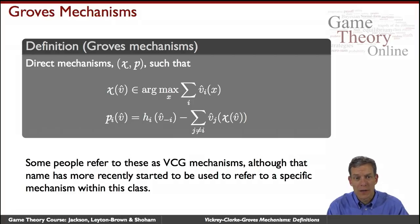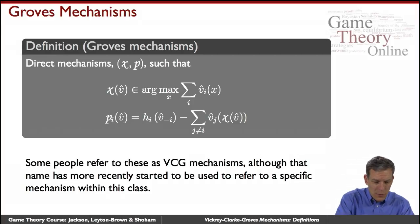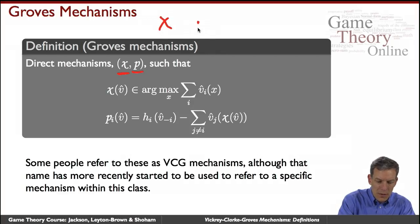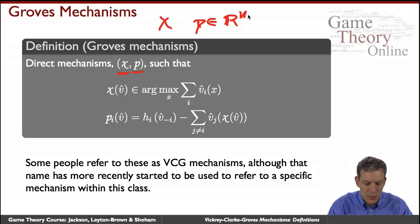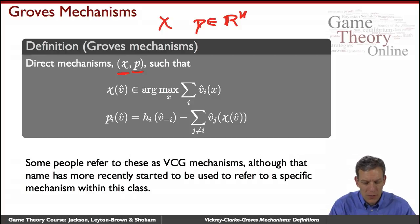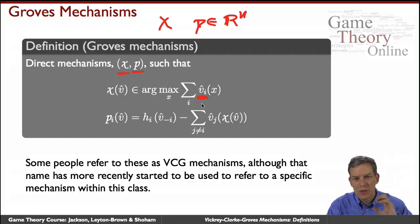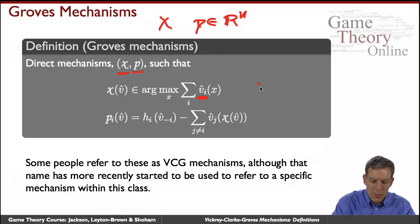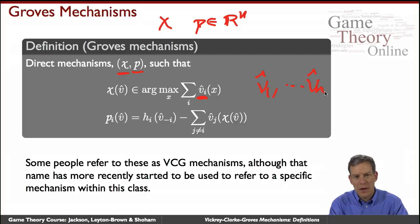So let's start with the general class of these mechanisms, which are known as Groves mechanisms, after Ted Groves. We're looking at direct mechanisms — making a choice out of whatever our X set is, and then the payment vector P is in R^N, telling us a payment for each of the individuals. In a Groves mechanism, we look at the announced utility functions — each person is telling us their evaluation function, which is their private information. So we get announcements V-hat-1 through V-hat-N, telling us how they value the different X alternatives.